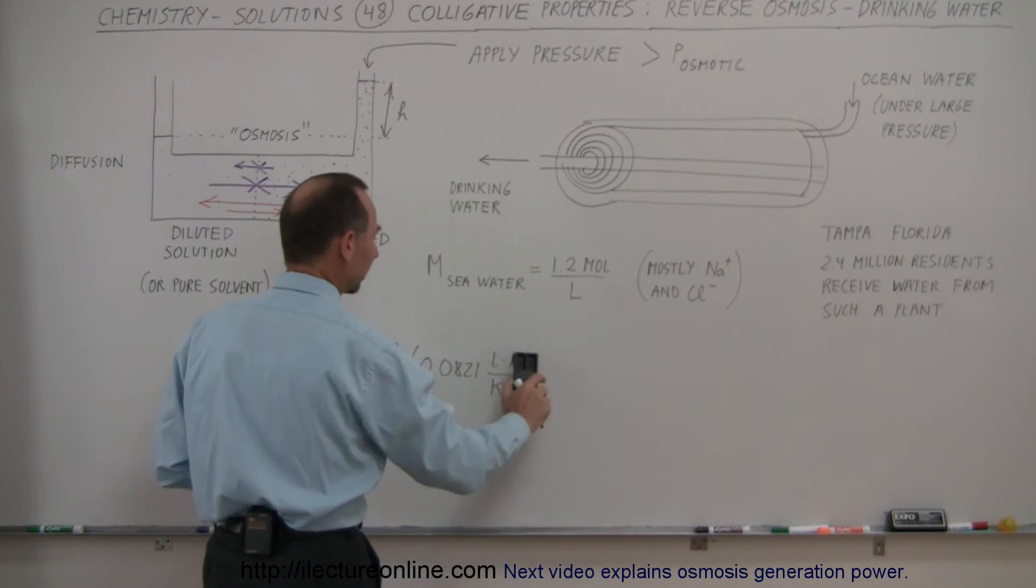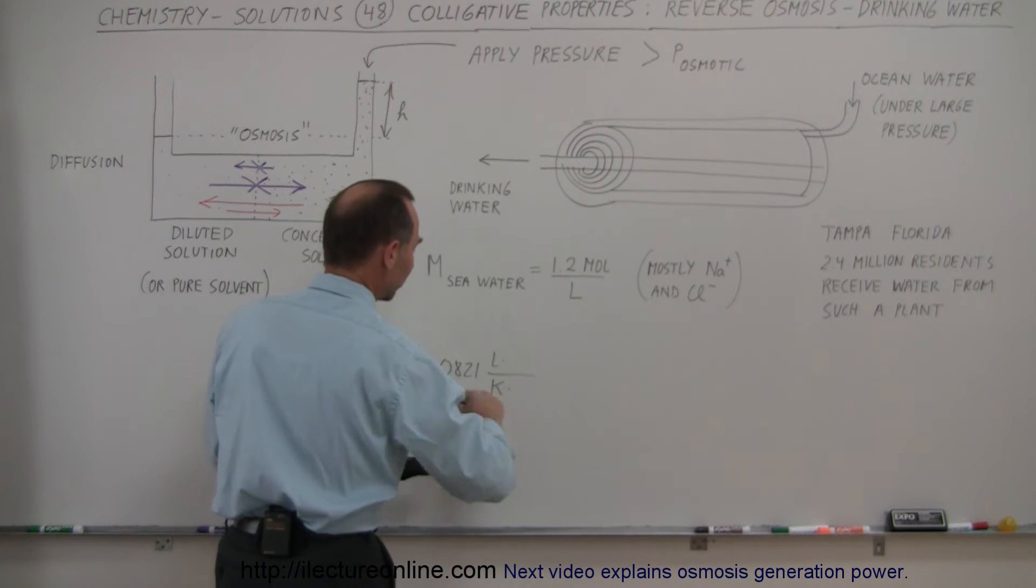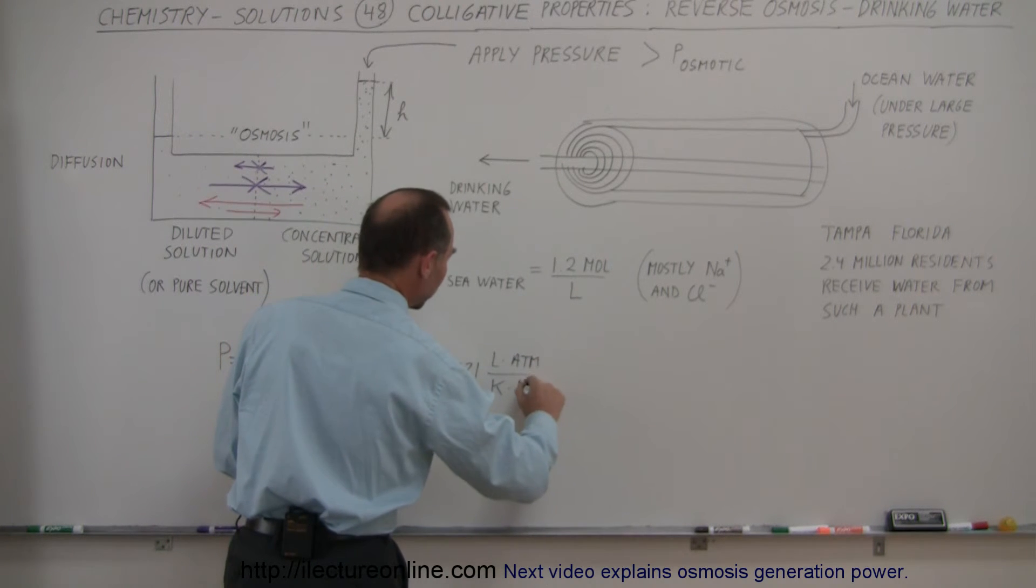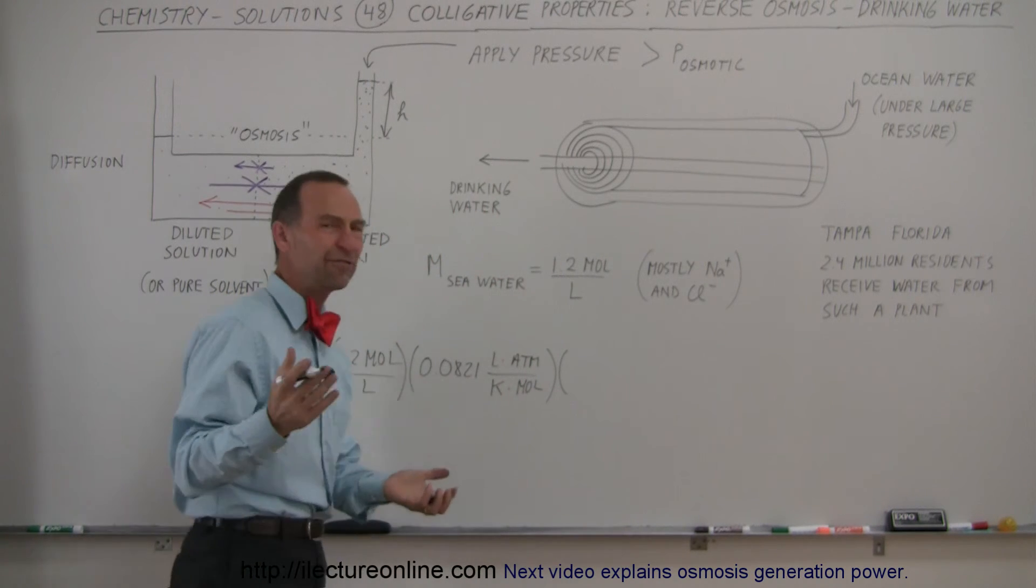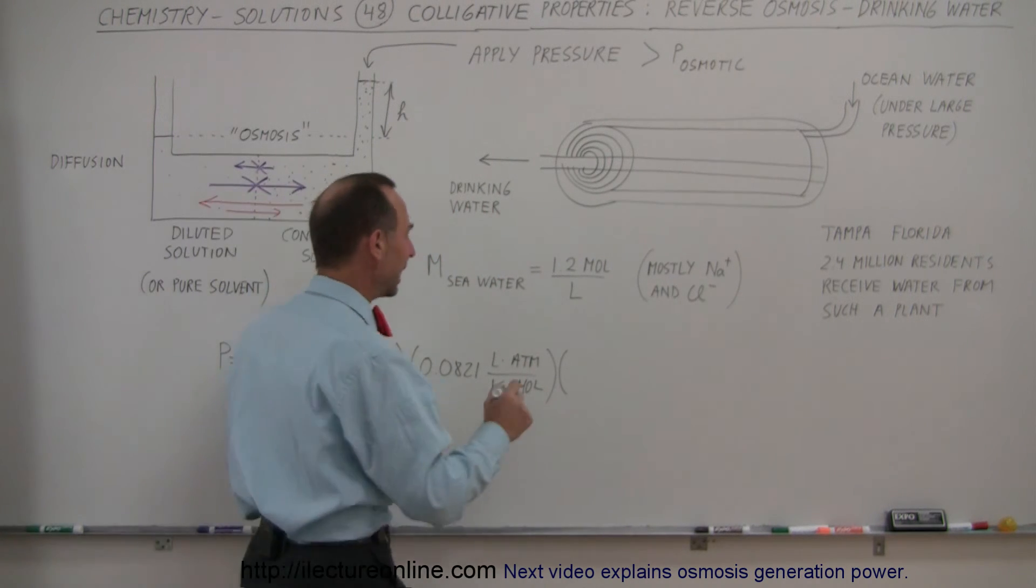Oh no, not liter times moles. This is liter times atmospheres. Atmospheres. Moles goes on the denominator. There we go. And then we multiply times the temperature. Let's say 15 degrees centigrade is about 288 Kelvin.